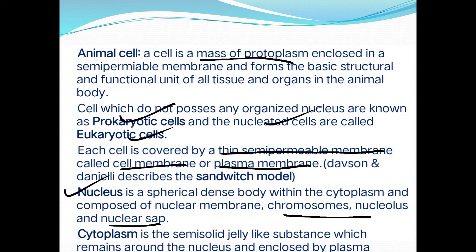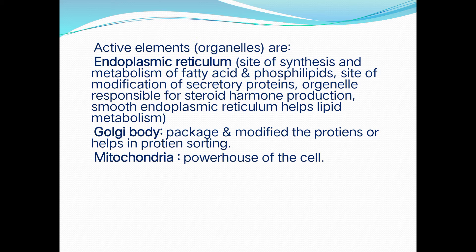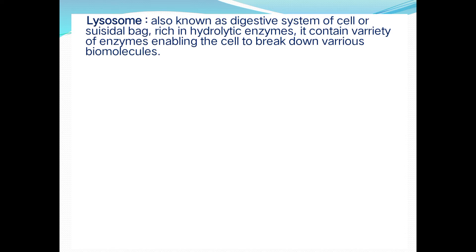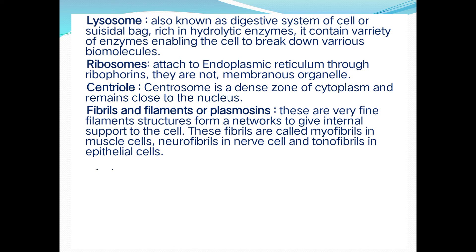The active elements or organelles of the cell include the endoplasmic reticulum, which is the site of synthesis and metabolism of fatty acids and phospholipids, site of modification of secretory proteins, and the organelle responsible for steroid hormone production. Smooth endoplasmic reticulum helps in lipid metabolism.